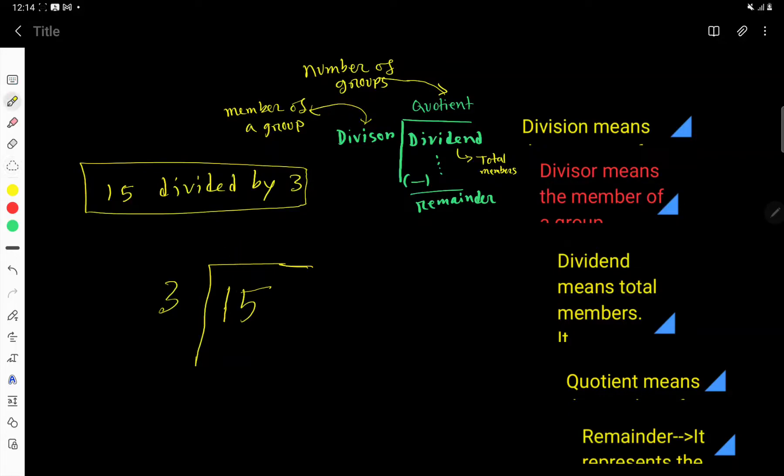In this video we'll learn how to divide 15 by 3, that is 15 divided by 3. So we can write this problem like this, where this 15 is the dividend, that is total members, and these 3 is the divisor, that is member of a group, and here we'll write quotient.